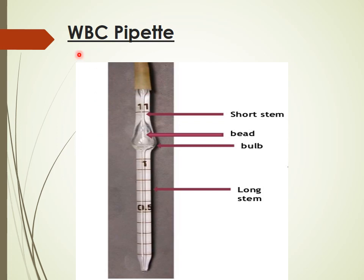The identification markings of the WBC pipette are at 0.5, 1, and 11. It has a long stem and a short stem. Another identification feature of the WBC pipette is a white color bead in the bulb.